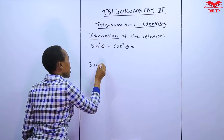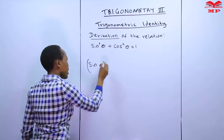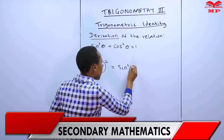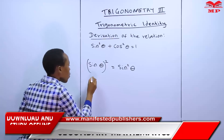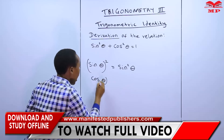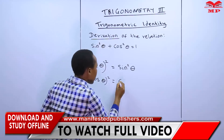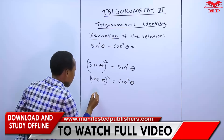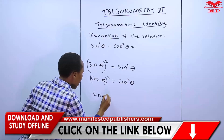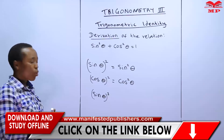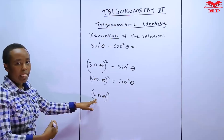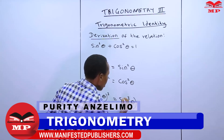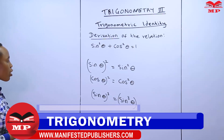When we have sin theta and we square sin theta, we write it as sin squared theta. The same case will apply for cos — if we have cos theta and we square, we end up getting cos squared theta. The same case will apply if we cube. For example, if we have sin theta and we want to cube, it's the same as sin theta times sin theta times sin theta, and this means it is sin cubed theta.